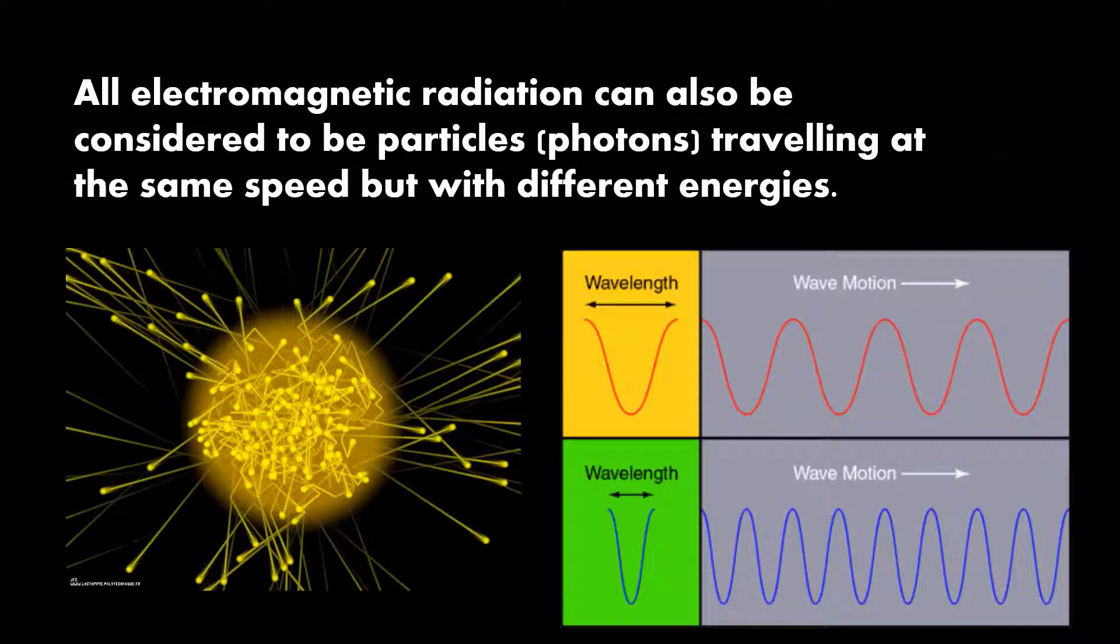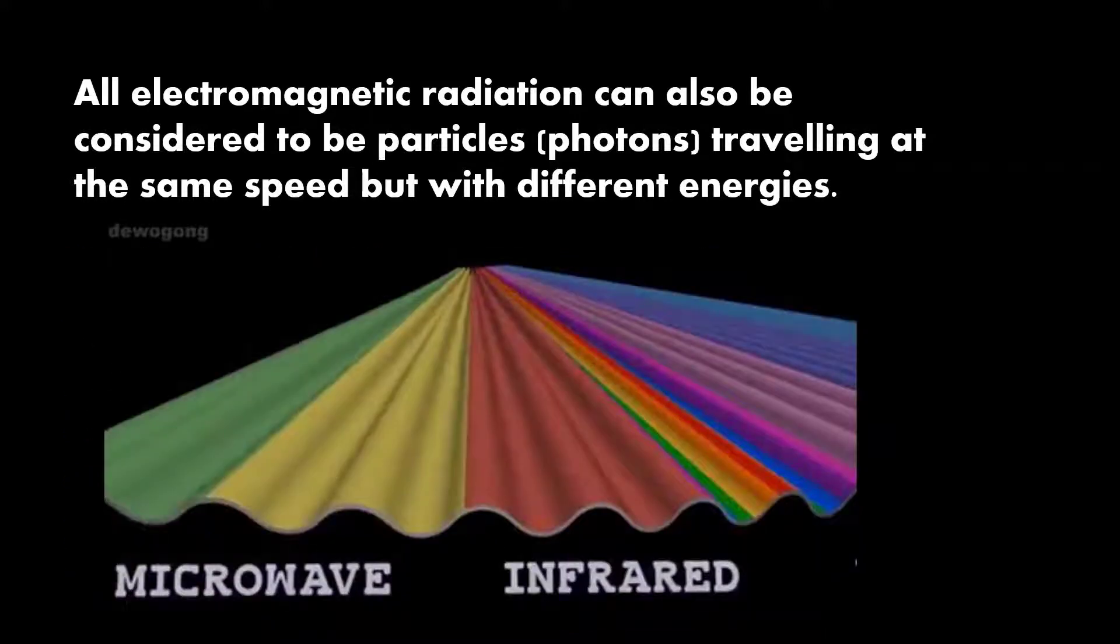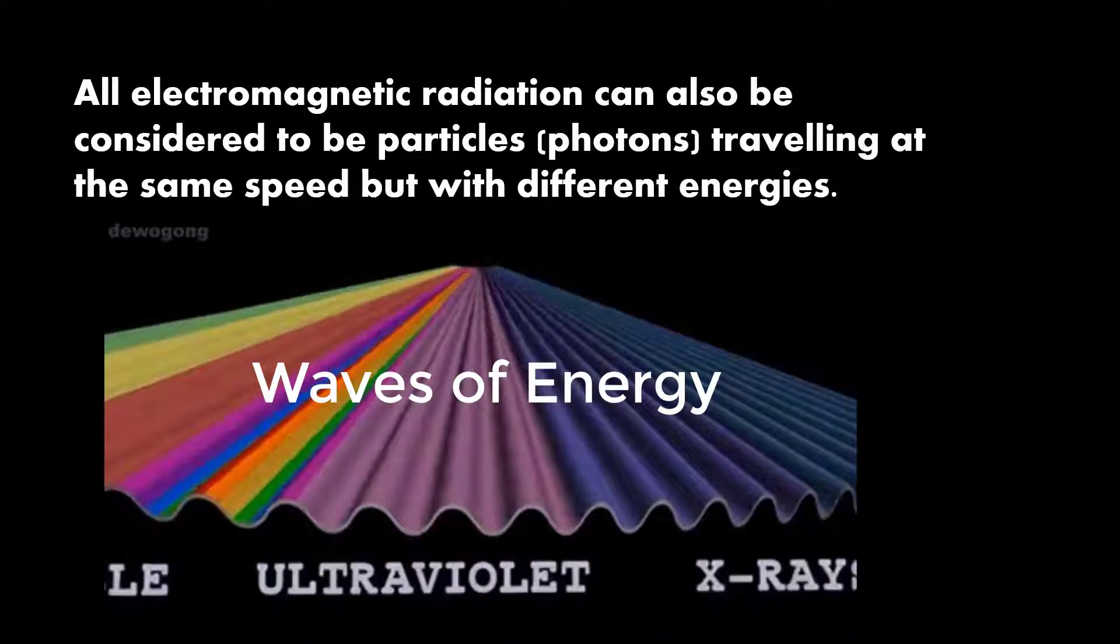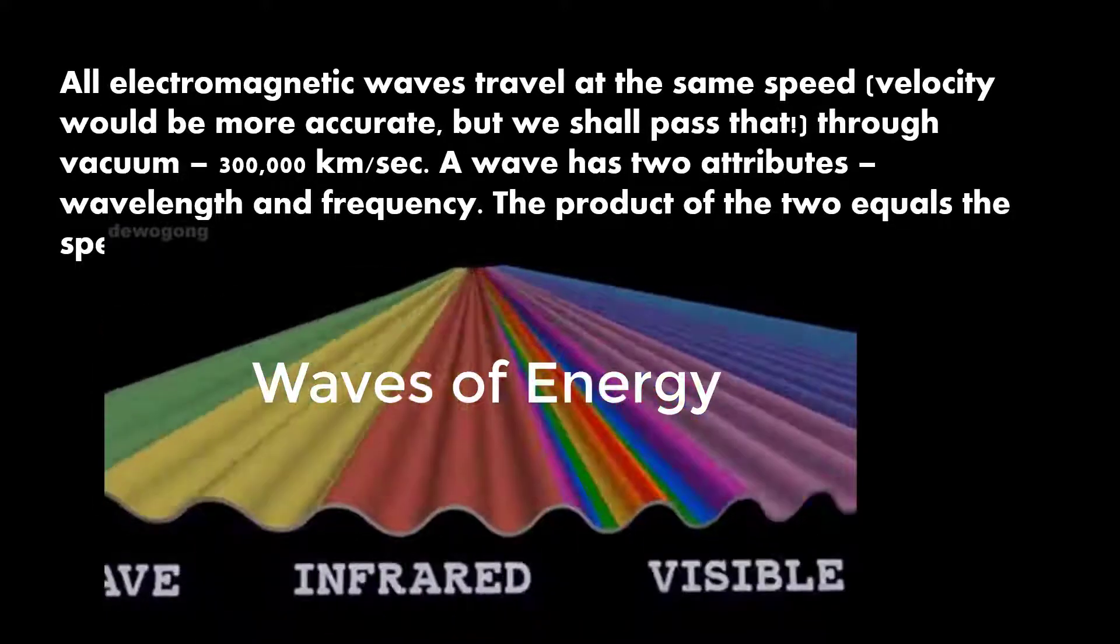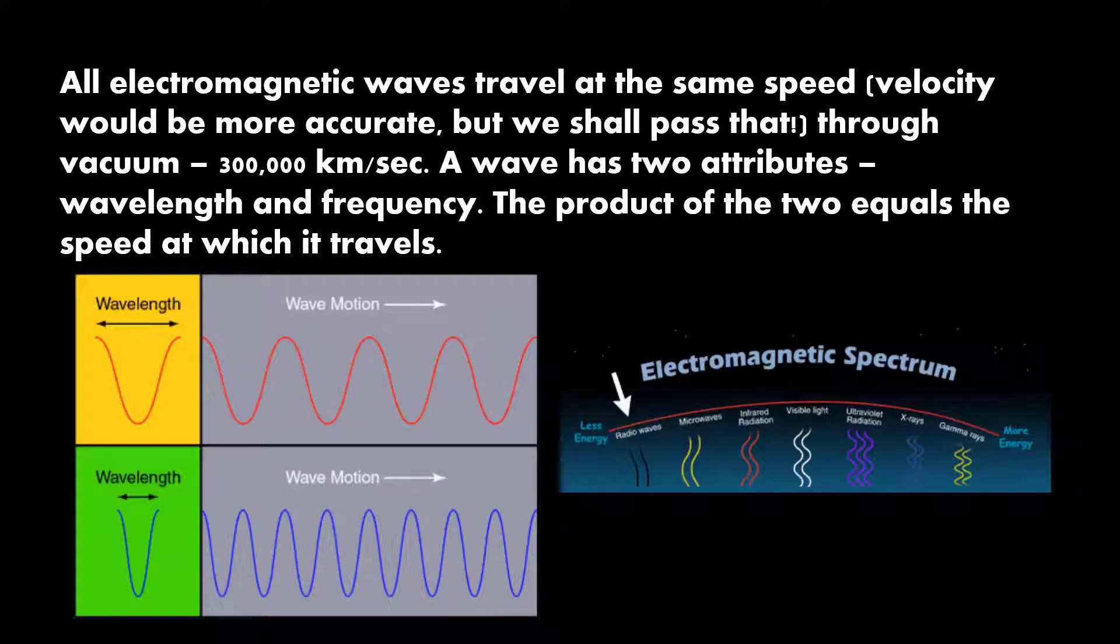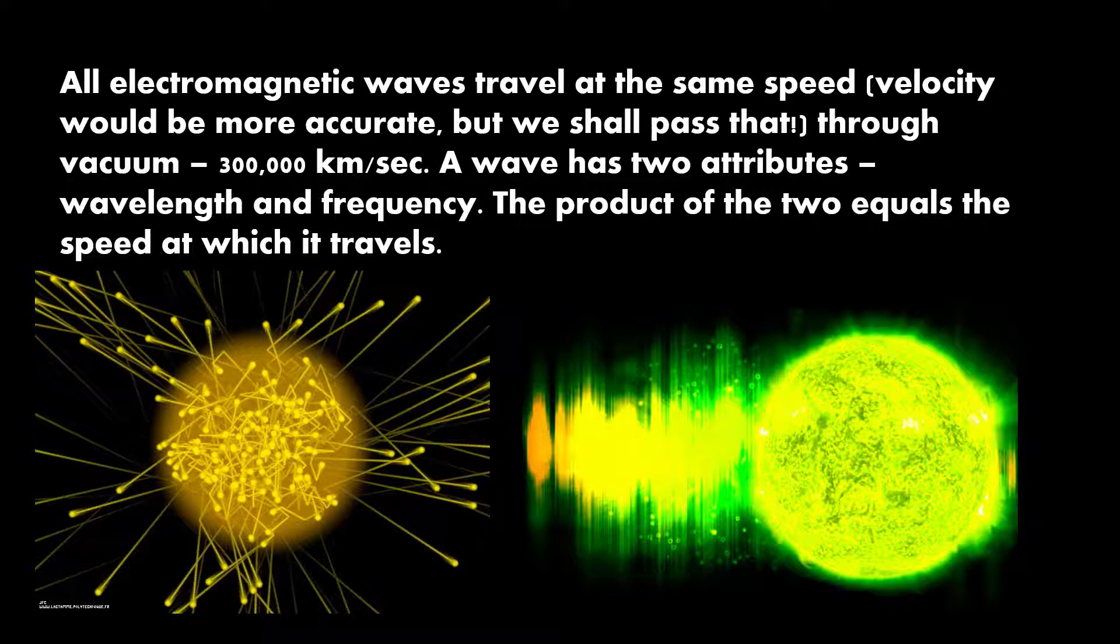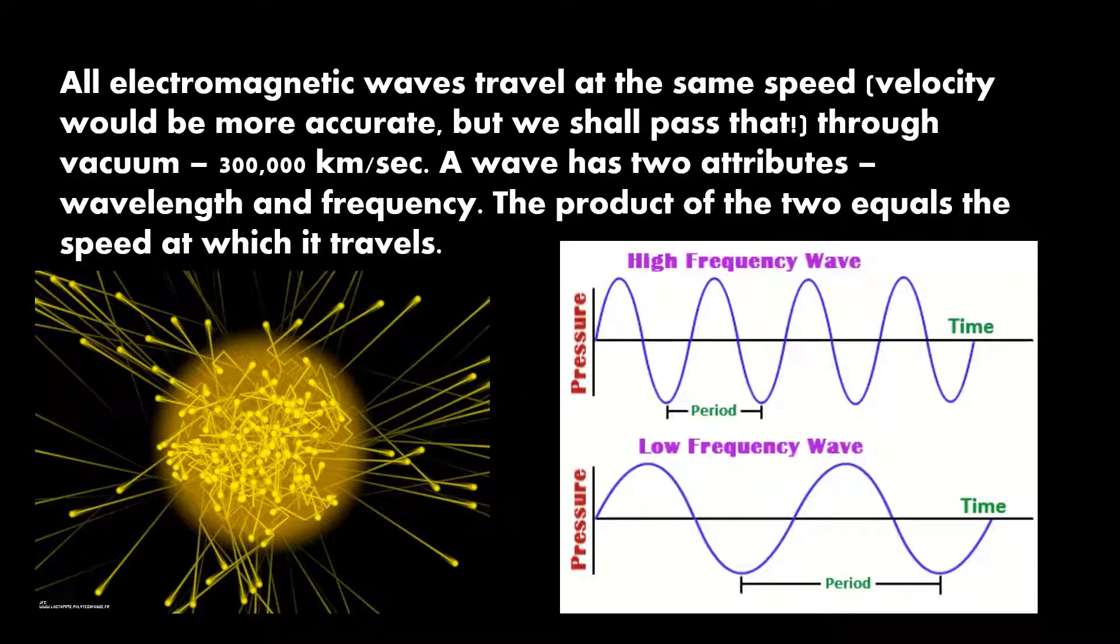Energy is demonstrated as wavelengths of frequency. All electromagnetic radiation travels at the speed of light with different energies. A sinusoidal wave is created. A wave has two attributes: wavelength and frequency. The product of the two equals the speed at which the photons travel.